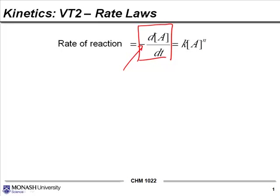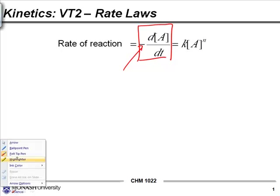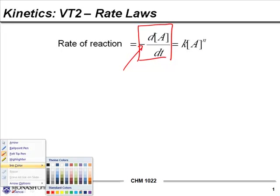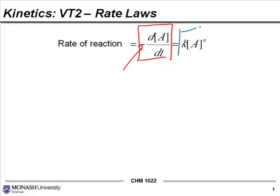But there is another way that we can express this and this is what we call the rate law. It looks like this guy in the blue box and it has the general form of K, where K is some constant, multiplied by the concentration of that reactant to the power of n.